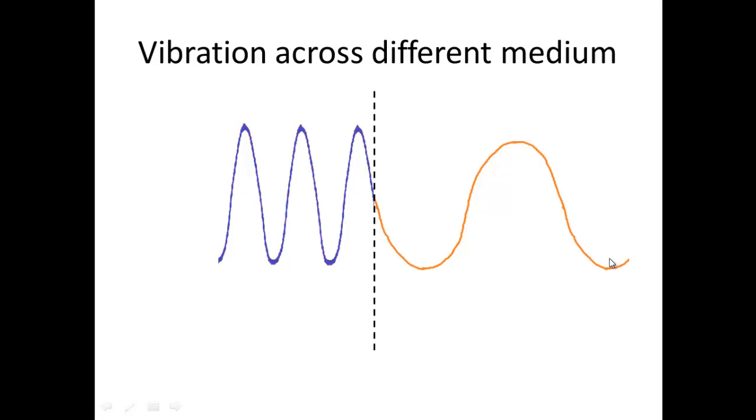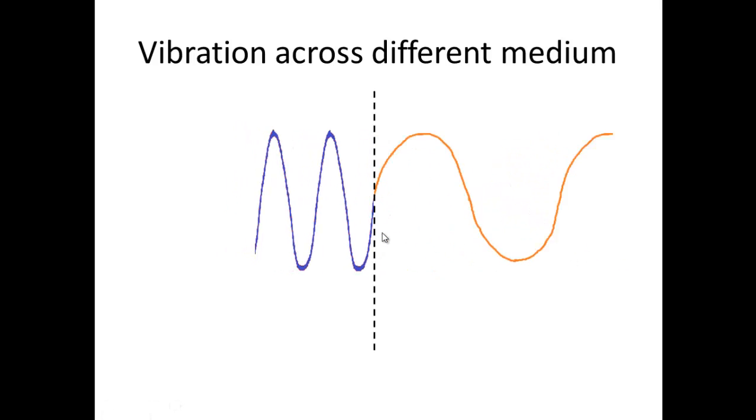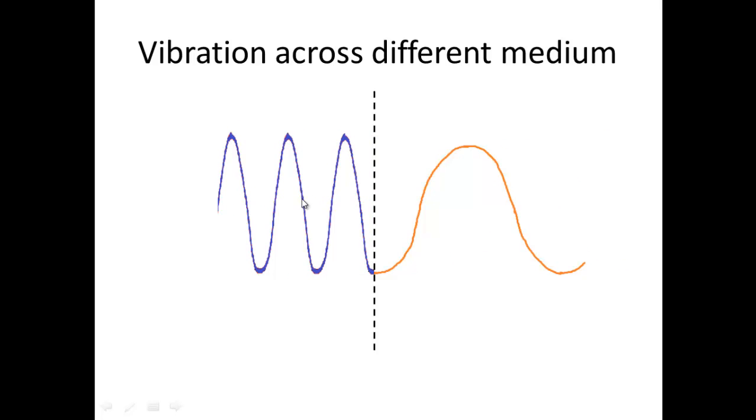We're not going to care so much about the reflection, but what I want you to see is, on this side, because the rope is lighter, your wave speed or your phase speed is going to be higher, and so your wavelength gets longer, but the amount of time it takes for one hump to move across on this side is the same as the amount of time it takes to create one wave on the transmitted side.